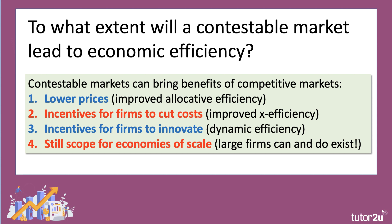We can still get economies of scale in a contestable market. There's no set, unique, predetermined number of firms in the market. In a contestable industry, large-scaled firms can and do exist. Indeed, often in a contestable oligopoly, you have a small cluster of very big firms with scale economies and numerous smaller firms — challenger brands — seeking to make a mark. So you can almost get the best of both worlds: enough firms for competition, but the size of firms allows for scale economies, and that improves productive efficiency.